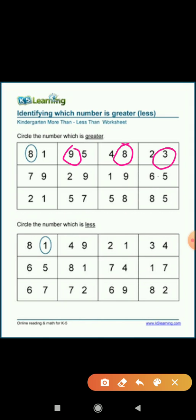One and nine. Nine is greater than one. Six and five. Six is greater than five. Okay, and next. Two and one. Two is greater than one.